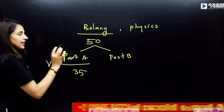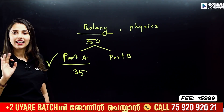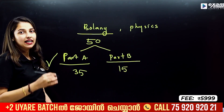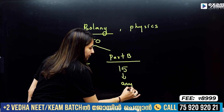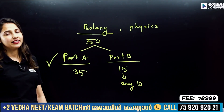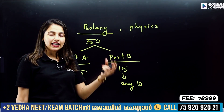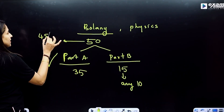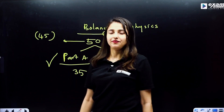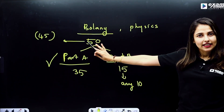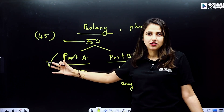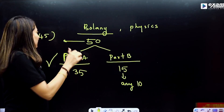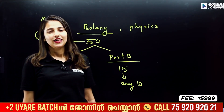If you have any compulsory options, you have all questions — 50 per subject. In Part B, there are 15 questions, out of which you attempt any 10. There are no optional choices within those 10. In Part B with 15 questions, we will write a mark for Part B — this applies to Physics, Chemistry, Biology, Botany, and Zoology.